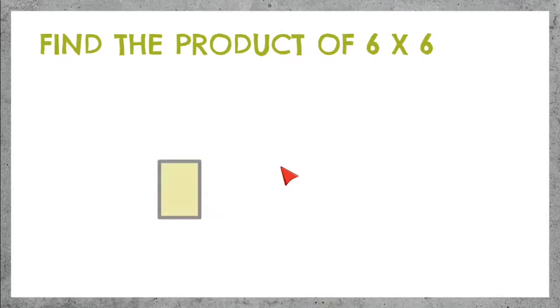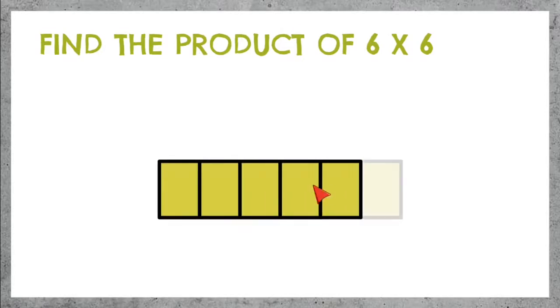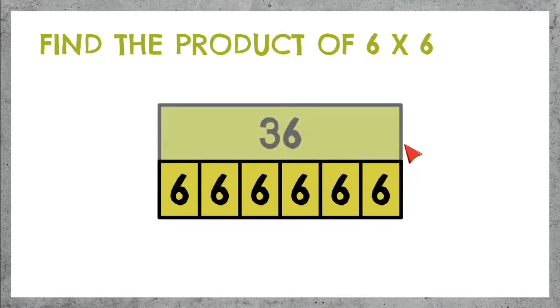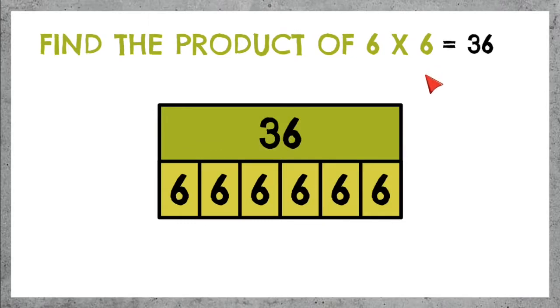6 times 6 means 6 parts with 6 inside of each part. If we add 6 plus 6 plus 6 plus 6 plus 6 plus 6, we get 36. 6 times 6 equals 36.